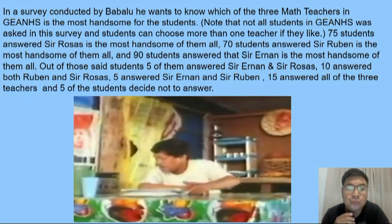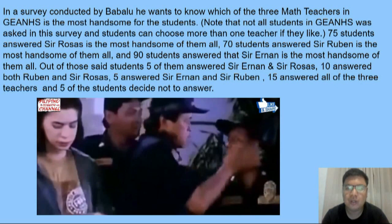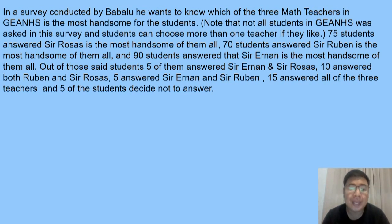Let's have an example. In a survey conducted by Babalu, he wants to know which of the three math teachers in Jayans is the most handsome for the students. Note that not all the students in Jayans were asked in this survey and students can choose more than one teacher if they like. 75 students answered Sir Rosas is the most handsome, 70 students answered Sir Ruben is the most handsome, and 90 students answered that Sir Ernan is the most handsome.